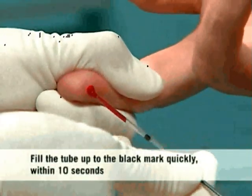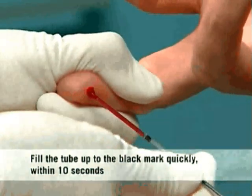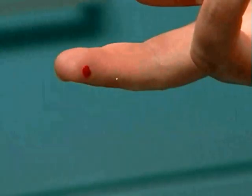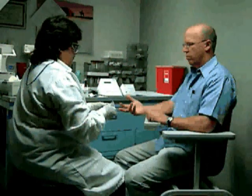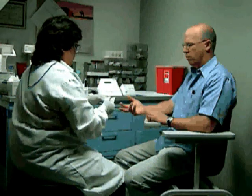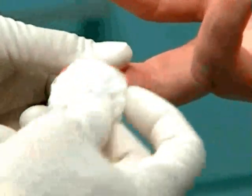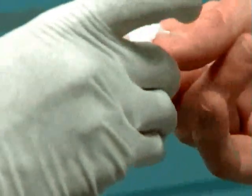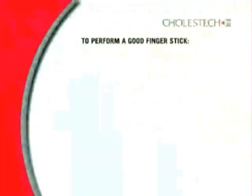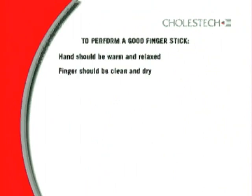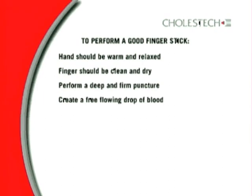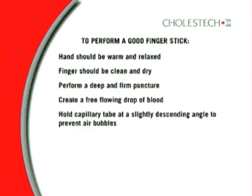Fill the tube up to the black mark quickly within 10 seconds or the blood may clot. If necessary, gently squeeze the entire finger and release to increase blood flow to the puncture site. If there is poor blood flow, reopen the puncture site by wiping firmly with a gauze pad. Keeping the hand below heart level will also increase blood flow. After filling the tube, have the patient press a gauze pad on the puncture site until the bleeding stops. Remember: the hand should be warm and relaxed, the finger clean and dry, perform a deep and firm puncture, create a free-flowing drop of blood, hold the capillary tube at a slightly descending angle to prevent air bubbles, and fill the capillary tube in under 10 seconds.